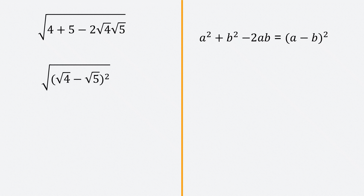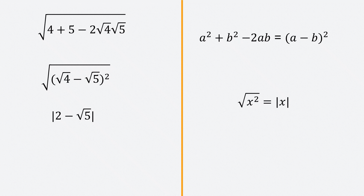So we have the square root of (root 4 minus root 5) all squared. We know that the square root of x squared equals the absolute value of x. So this becomes the absolute value of root 4 minus root 5, which is the absolute value of 2 minus root 5. Since root 5 is bigger than 2, that expression is negative. The absolute value of a negative expression is just the negative of that expression, so we get negative of (2 minus root 5), which equals root 5 minus 2.